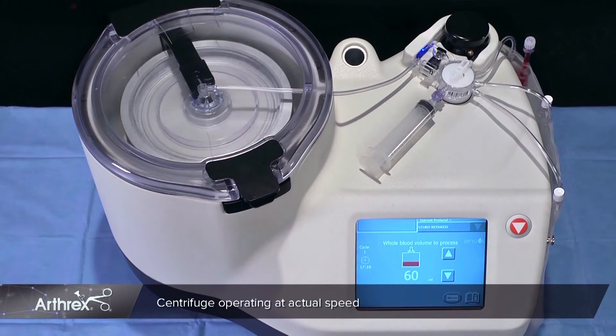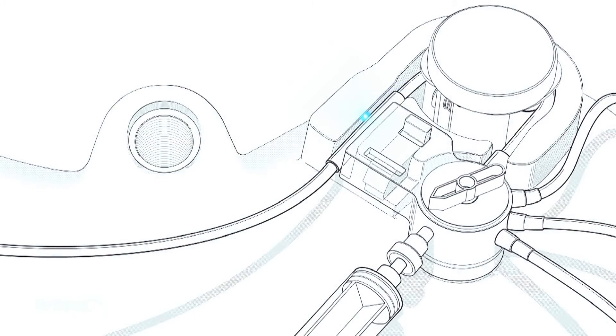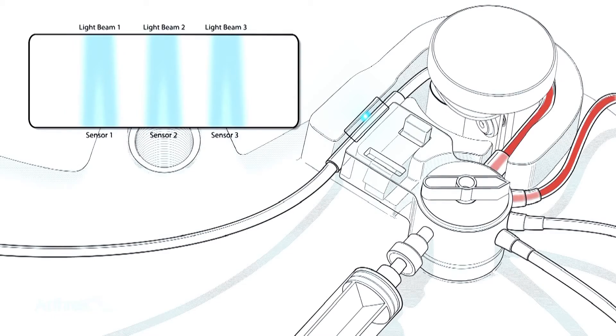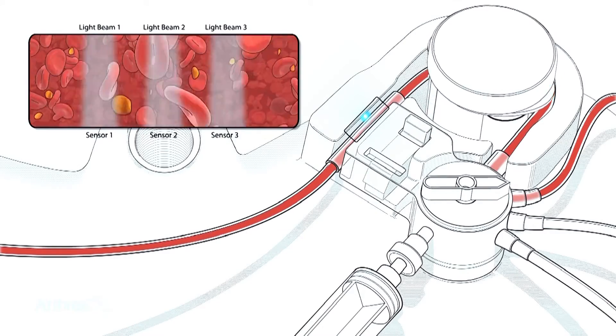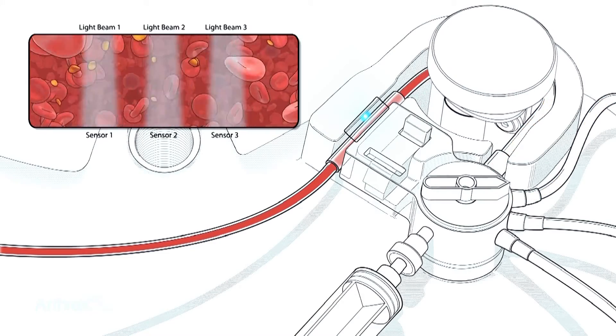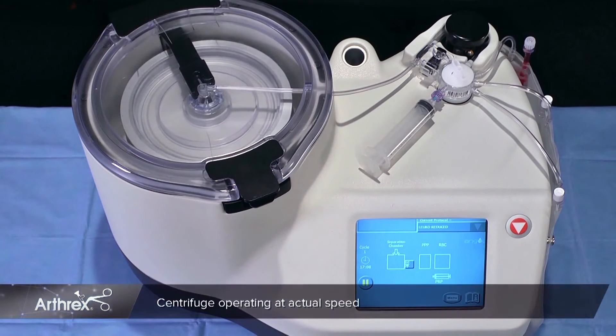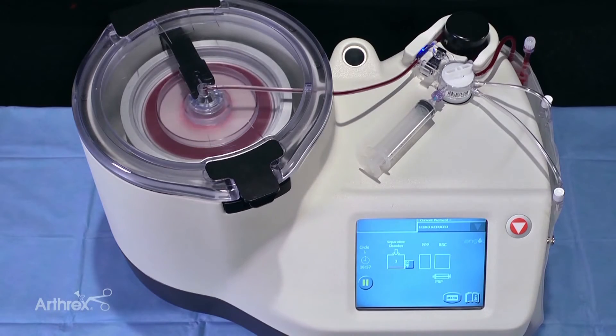As blood is drawn from the whole blood reservoir and loaded into the separation chamber, it will pass through the platelet sensor. The Angel incorporates three sensors to separate blood components using cell specific wavelengths of light. The Angel can process 40 to 180 milliliters of whole blood in a single cycle. The Angel will automatically adjust spin times and speeds when volume and hematocrit values are changed. The adaptive spin technology utilized by the Angel system ensures optimal platelet recovery.